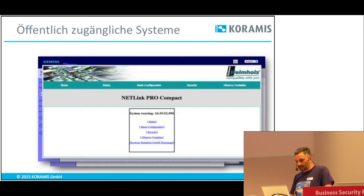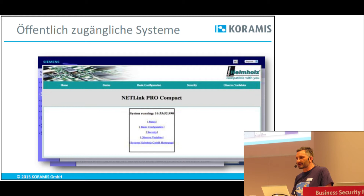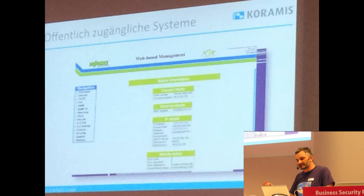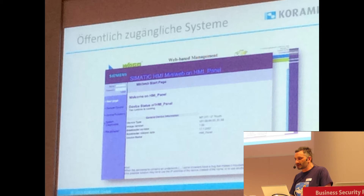Ich habe hier ein paar solche öffentlichen Systeme rausgesucht. Das ist die typische Haussteuerung, wo ich die Heizungssteuerung manipulieren kann, die ich im öffentlichen Internet gefunden habe. Die letzten Tage habe ich live in meiner Präsentation gezeigt, dass ich eine Halle bei der Feuerwehr in Weiden gefunden habe, wo ich Tore öffnen und das Licht ein- und ausschalten konnte. Hier ist ein typisches Webplattform-Management von der Firma WAGO. Bei Shodan nach WAGO suchen — oftmals ist das Standardpasswort nicht geändert: User Admin, Passwort WAGO.